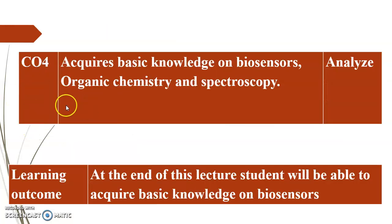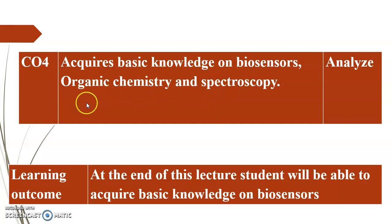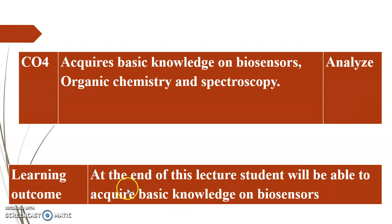The course outcome for this unit is that the student will be able to acquire basic knowledge on biosensors, organic chemistry, and spectroscopy. The Bloom's taxonomy level is analysis. The learning outcome is that at the end of this lecture, you will be able to acquire basic knowledge on biosensors.